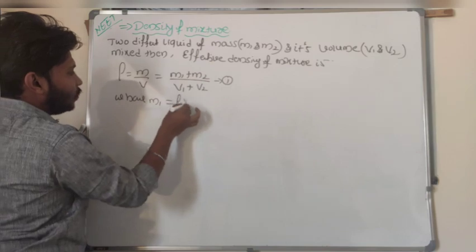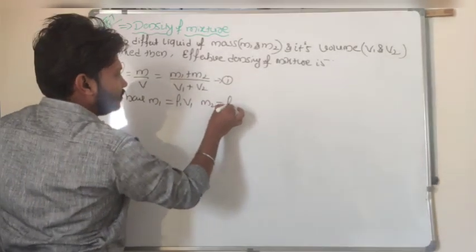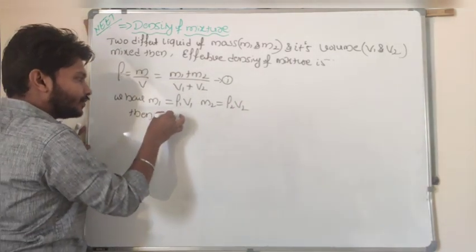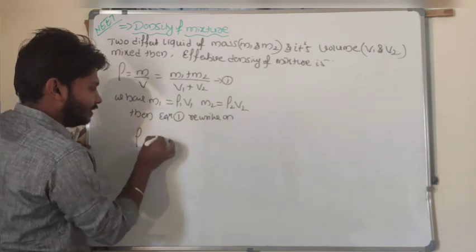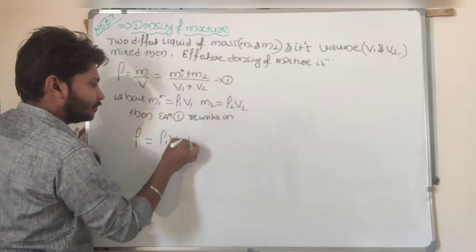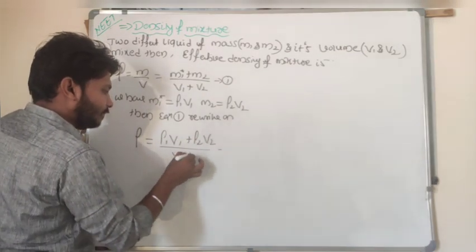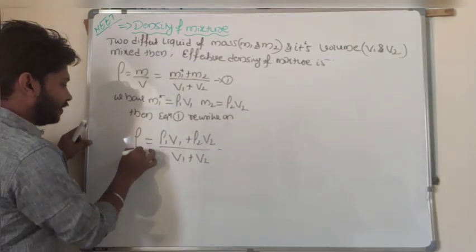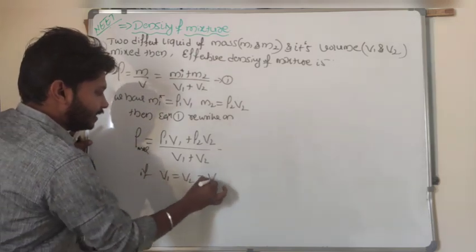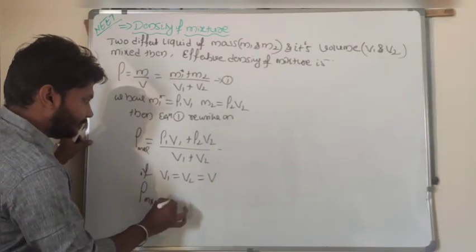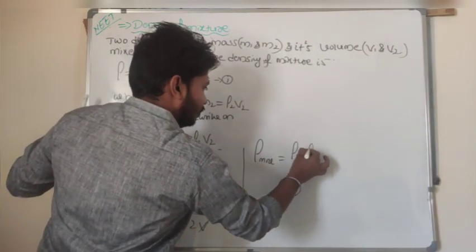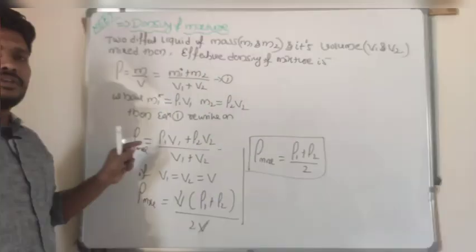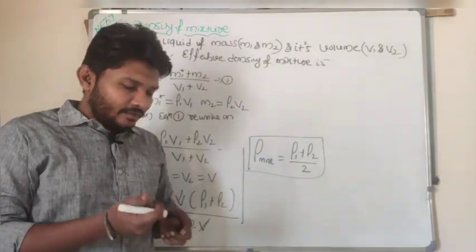Where m1 = rho1·V1 and m2 = rho2·V2. Substituting: rho = (rho1·V1 + rho2·V2) / (V1 + V2). If the volumes of both liquids are equal (V1 = V2 = V), then V cancels out and the density of mixture equals (rho1 + rho2) / 2. This is the generalized expression when two liquids have equal volumes.